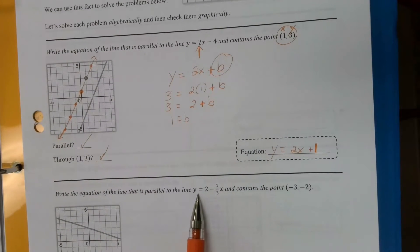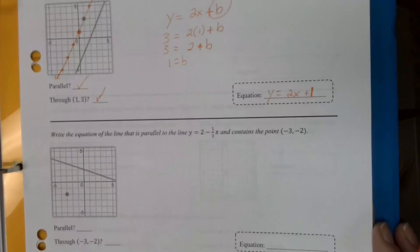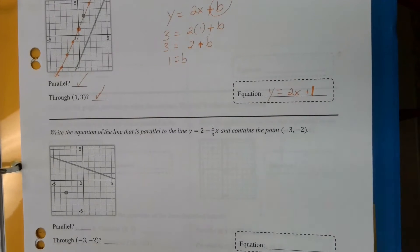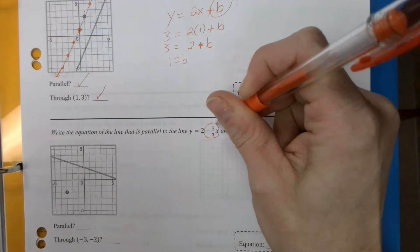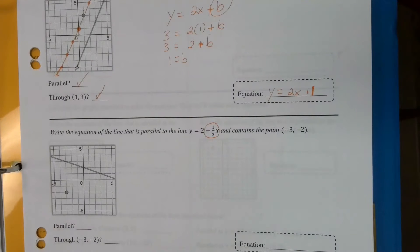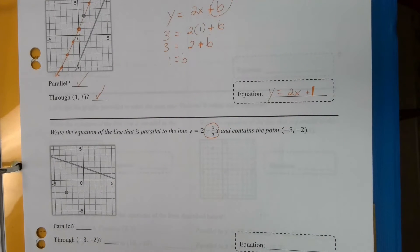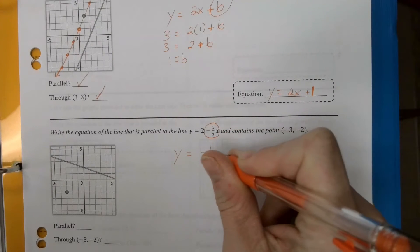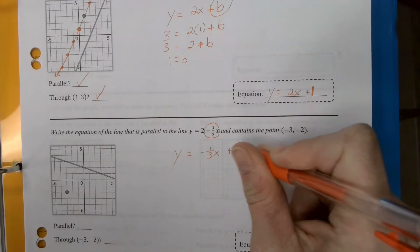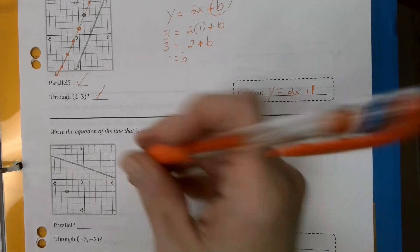Let's do another one. Write an equation parallel to the line y equals 2 minus one-third x and contains that point. We know that the slope is here — don't let the moved position trip you up. So we're going to have y equals negative one-third x plus b.